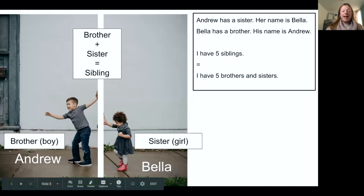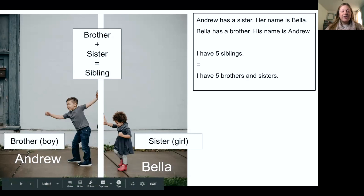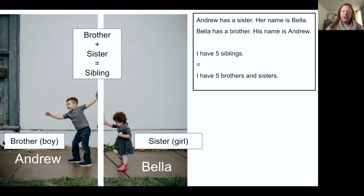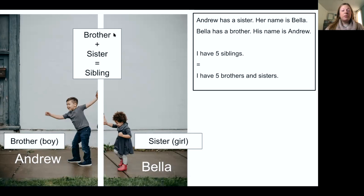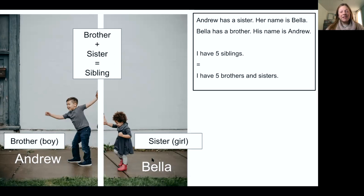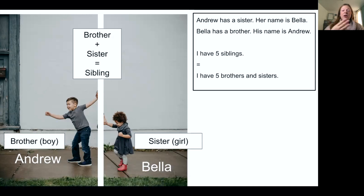Now let's look at the relationship between Andrew and Bella. Andrew is a boy, so he is Bella's brother. Bella is a girl, so she is Andrew's sister. Brother and sister is the same as sibling. Andrew has one sibling — her name is Bella. Bella has one sibling — his name is Andrew.